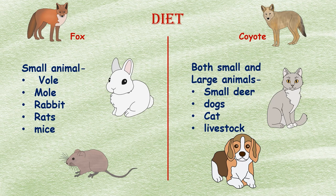The fox is a small animal, so it preys on small animals like voles, mice, rats, rabbits, and moles. The coyote's diet also consists of the same small animals that foxes eat, but coyotes don't limit themselves to small creatures — they also prey on larger animals like small deer, dogs, and livestock.